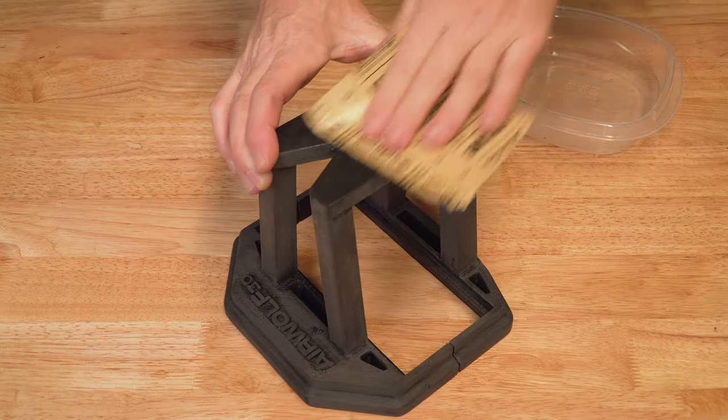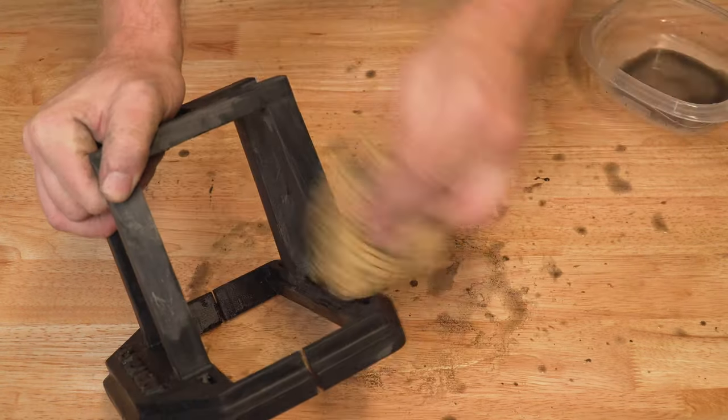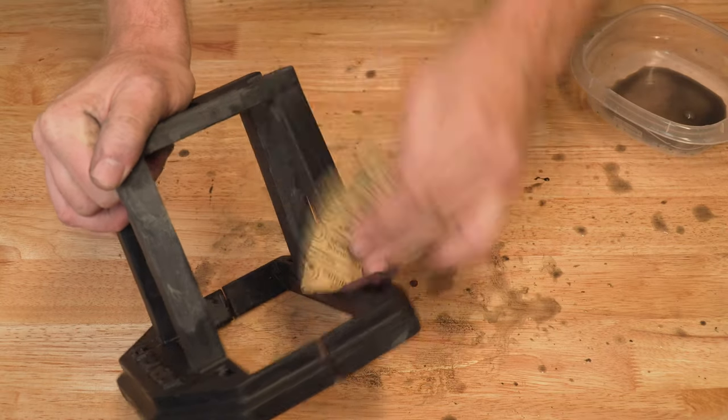Switching to 400 grit, sand until the part feels and looks completely smooth. You can go up to a finer sandpaper if you would like, but it is usually overkill and not needed in most cases. 400 usually works fine.